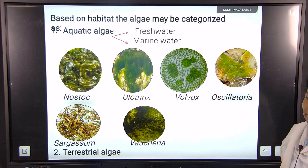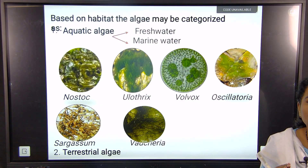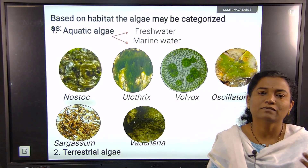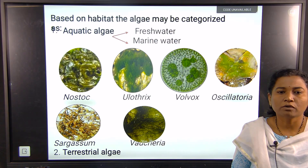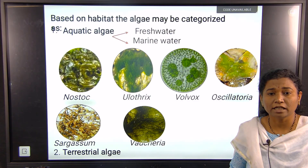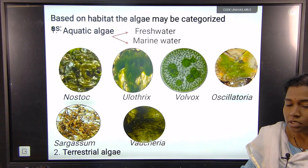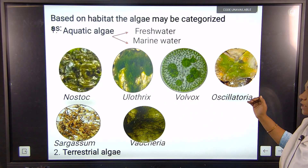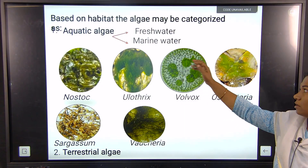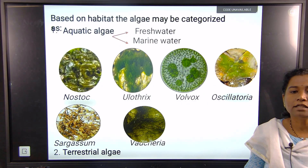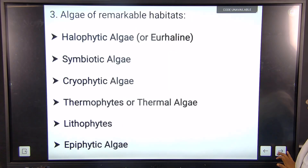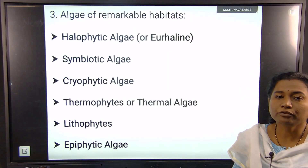Based on habitat, algae may be categorized as aquatic algae — both freshwater and marine water. In freshwater the salinity may be below 10 ppm, while in marine water salinity may reach up to 30 to 40 percent. Some freshwater examples are Ulothrix, Volvox, and Oscillatoria, while Sargassum is from the marine environment. Second, terrestrial algae grow on the terrestrial environment; for example, Volvaria.